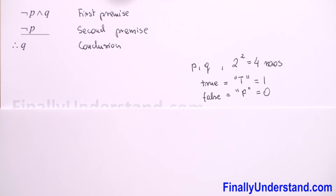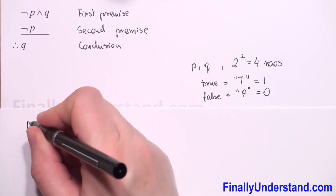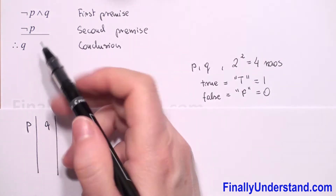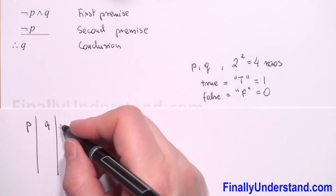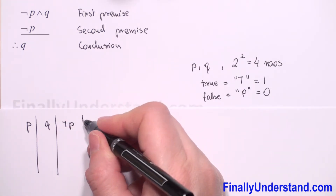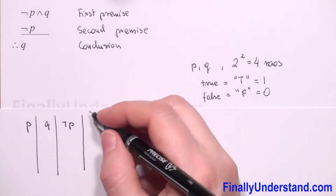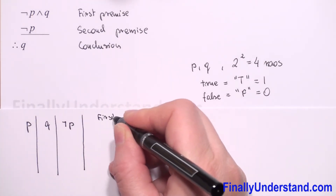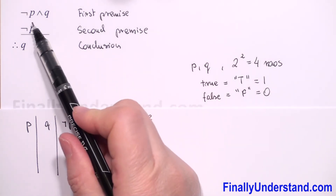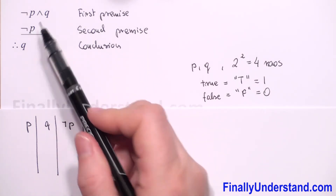Now we have to construct a truth table that shows the truth value of each premise and the truth value of the conclusion for all combinations of truth values of the simple statements. We have two simple statements, so we have a column for p and a column for q. Because we have not-p here, next I will put a not-p column. In the next column we have to write the first premise, which is the conjunction not-p and q.